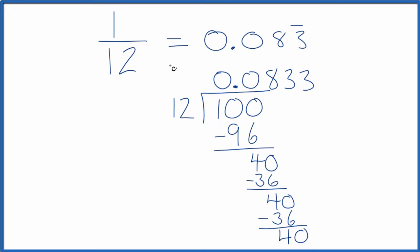So in answer to our question, the fraction 1/12th, when we divide 1 by 12, we end up with the decimal 0.083 with those threes repeating.